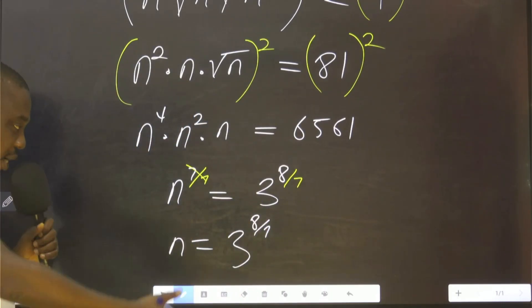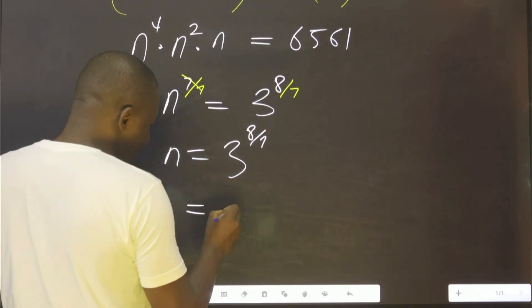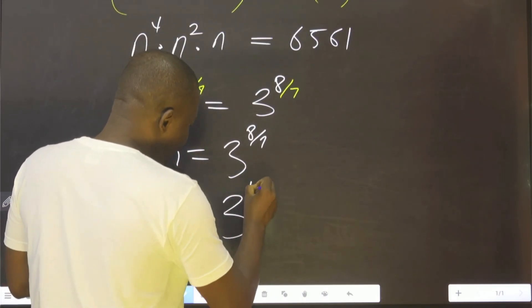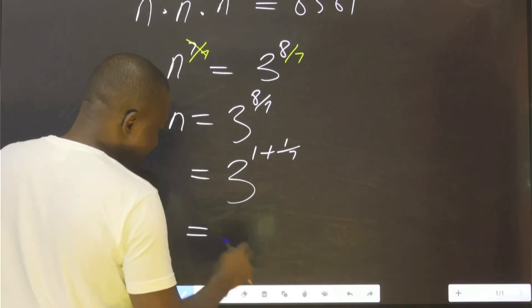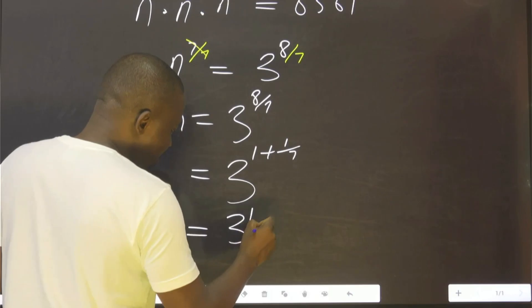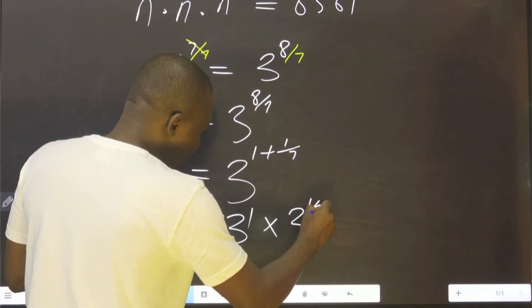Look at it. What is the meaning of 8 over 7? We can also express this as 3 raised to the power 1 plus 1 over 7. You also agree with me. I can rearrange this by saying this is 3 multiplied by 3 raised to the power 1 over 7.